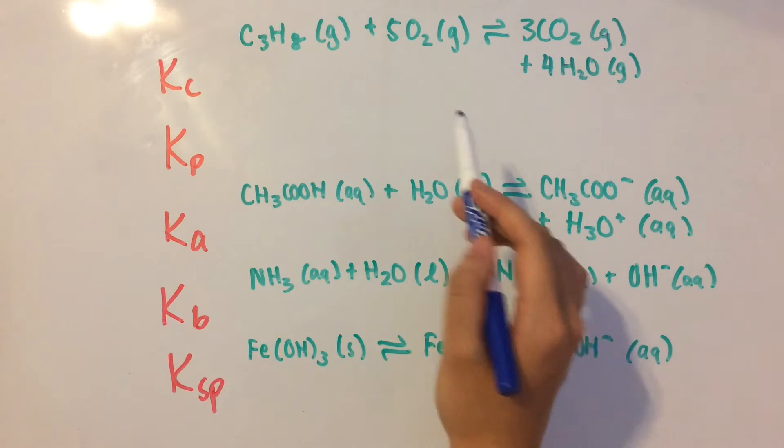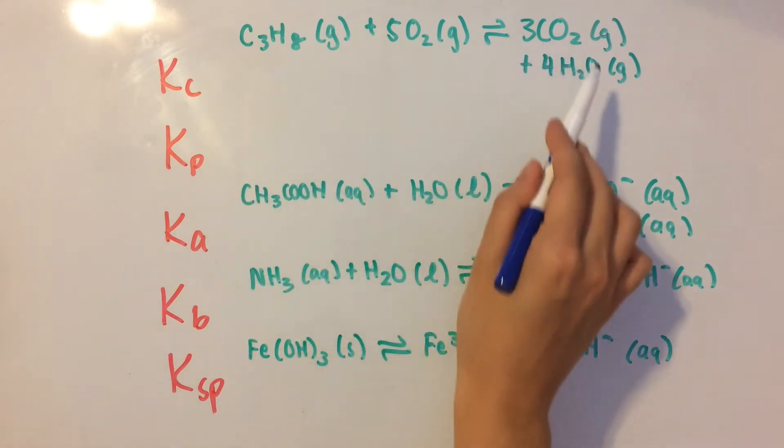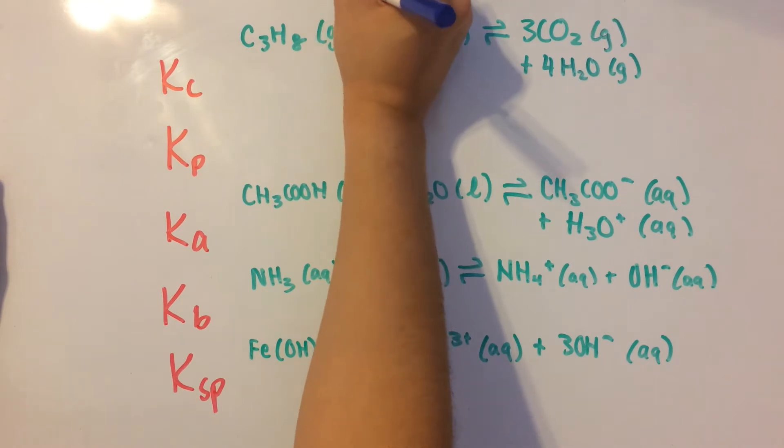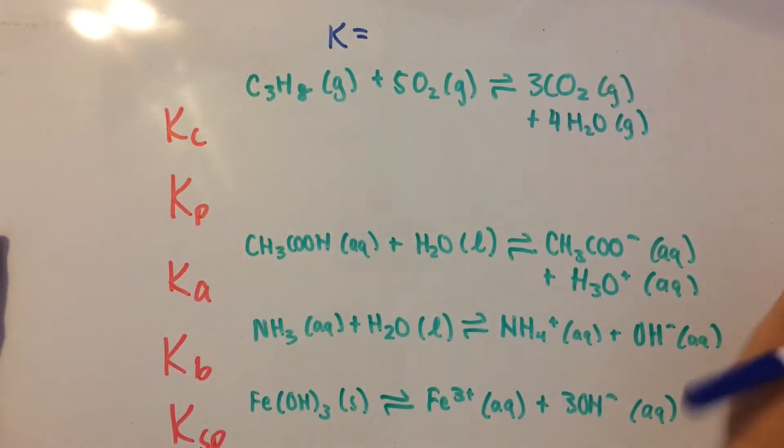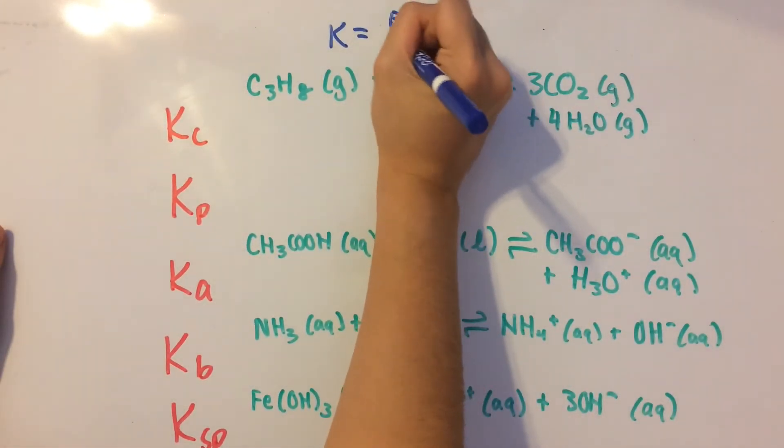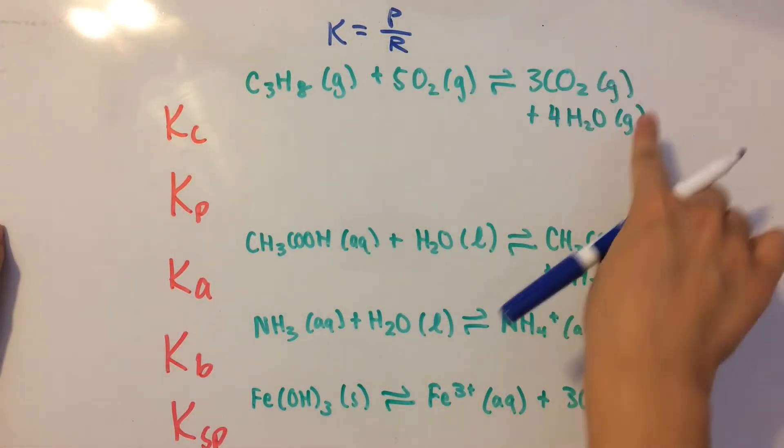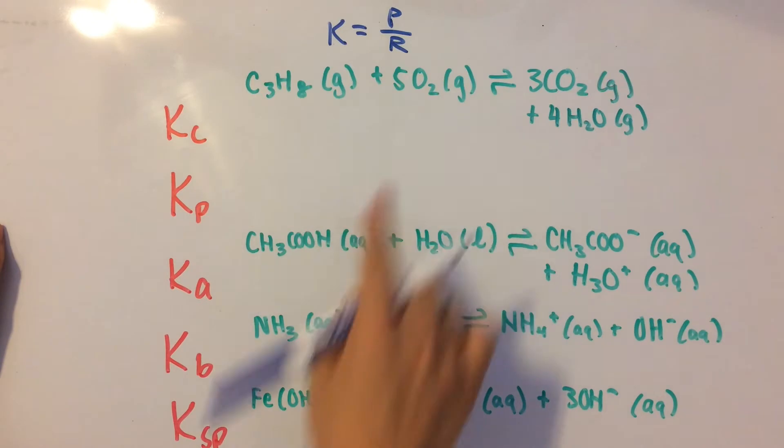So let's start with Kc. We're given this example reaction. What we need to remember is that the equilibrium expression is written in terms of products over reactants. So we're going to have these products over these reactants.